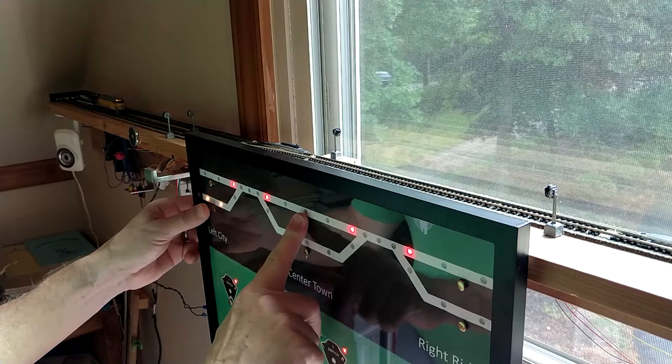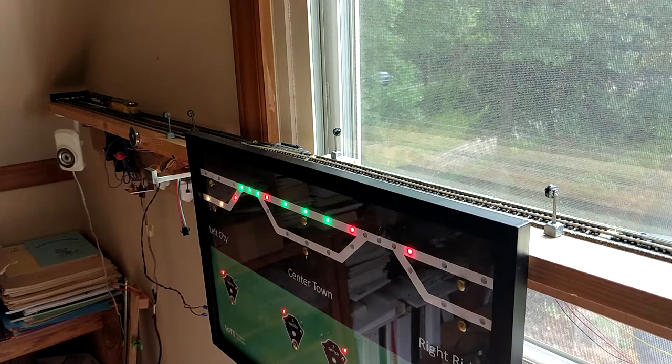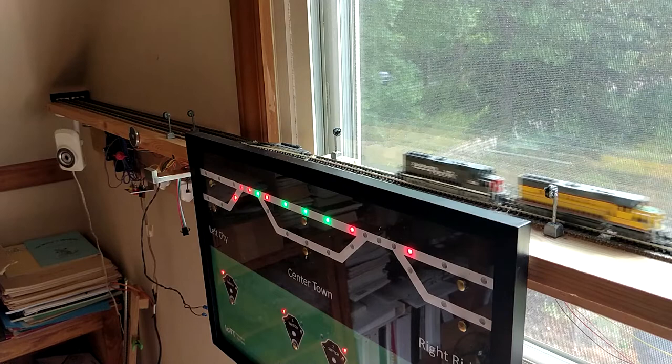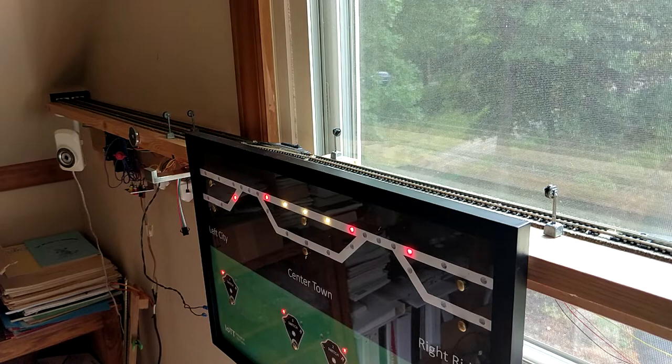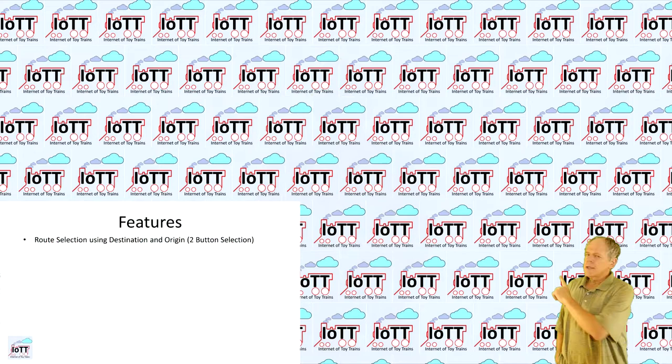In this video I am showing how to use a yellow hat to build a CTC panel with two-button route selection and activation, route status display and route monitoring while the train is moving to the destination track. And even though it might look like magic, it is pure logic. Welcome to the IOTT channel, I am Hans Tanner.